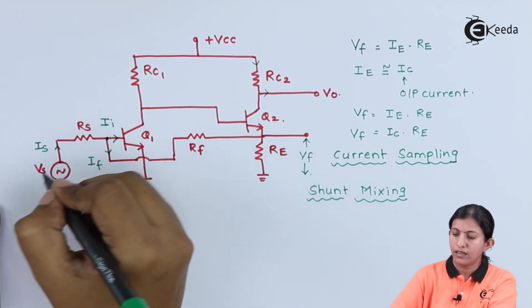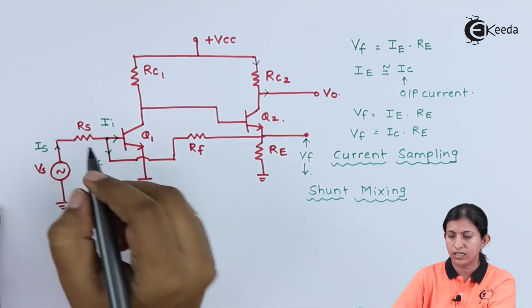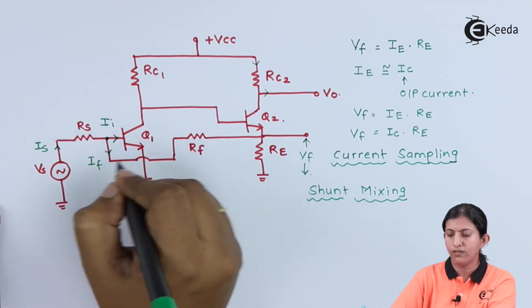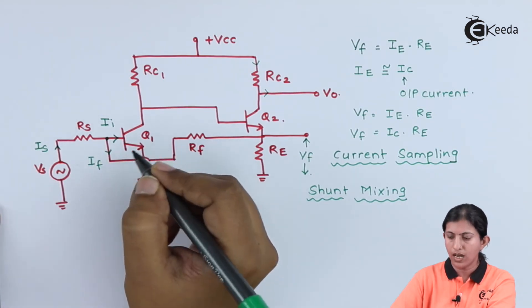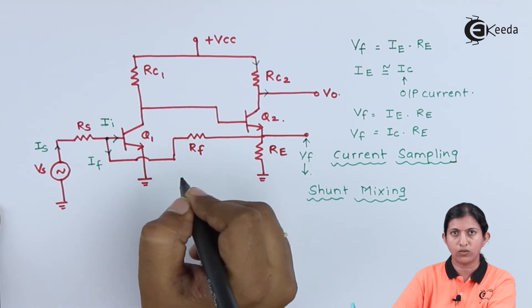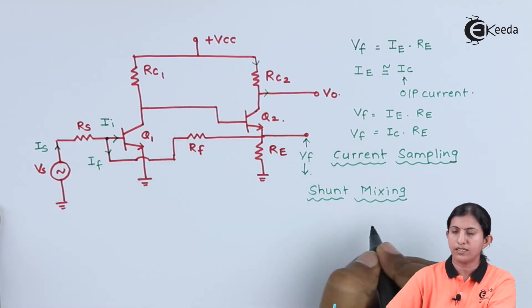The source current Is is divided into the current going to the amplifier network and the current going to the feedback network. Hence, this mixing is shunt mixing.